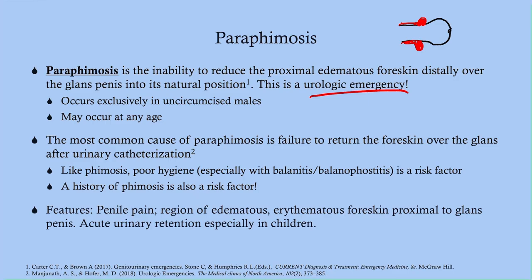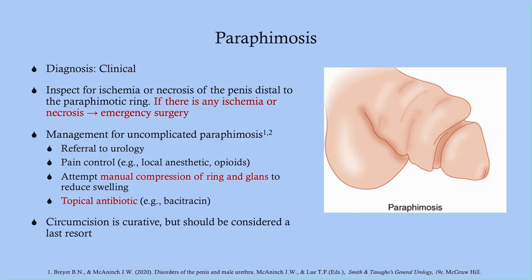Features include painful penile pain — the edematous, swollen area is very painful — and there can be urinary retention in children. The diagnosis is clinical; no labs or imaging are needed. Inspect the glans for any ischemia or necrosis. If ischemia or necrosis is present, send these patients for emergent surgery. If it's uncomplicated, get a urology consult. Pain control ranges from a local anesthetic to opioids depending on the patient.